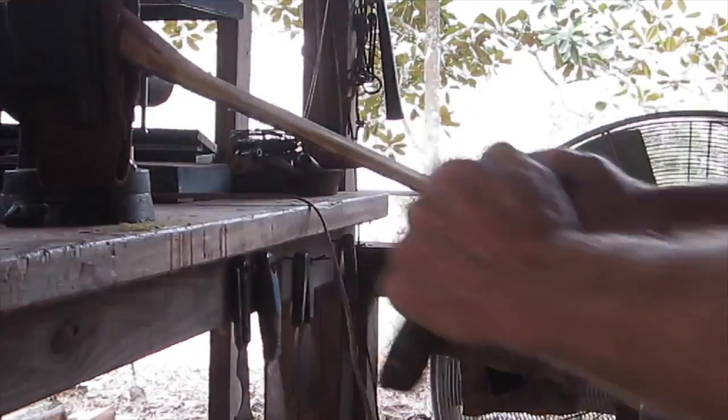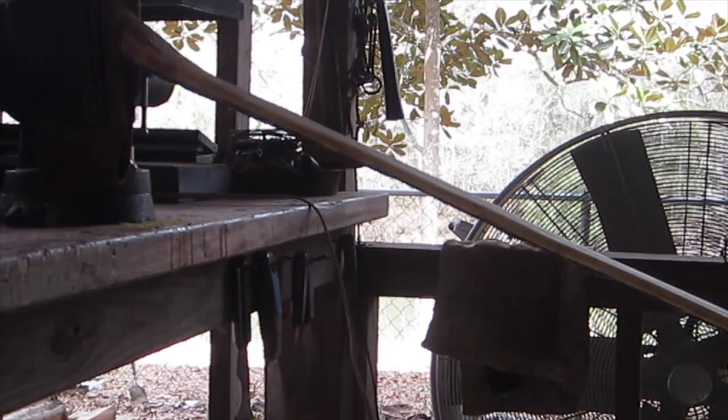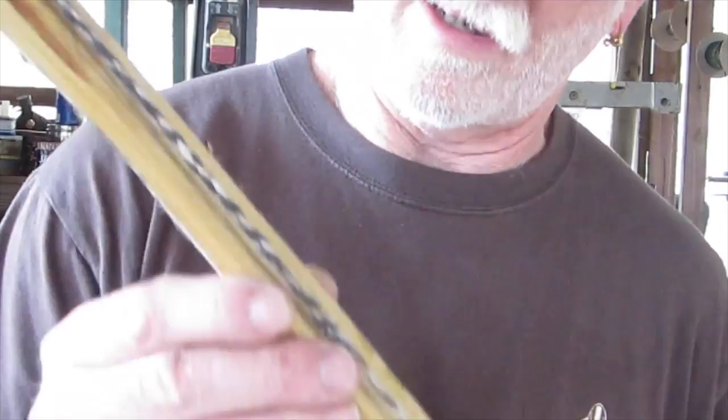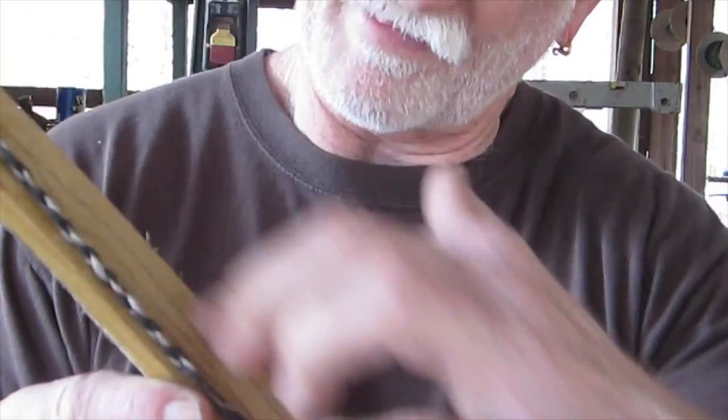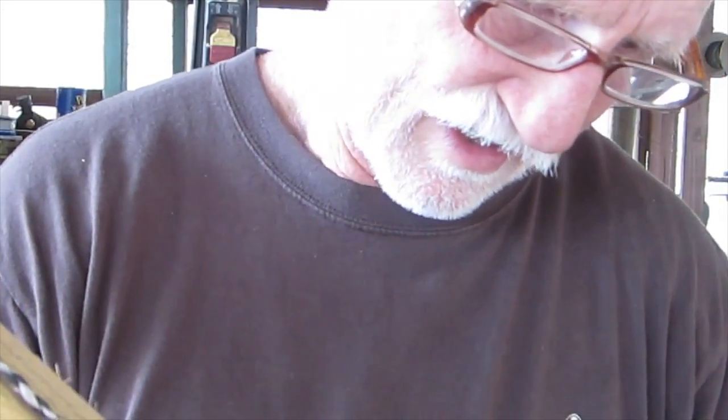I was taking wood off the entire length of the limb instead of this limb. Now on the other hand, this limb only needs to be pulled down from here up. This part right here is what's holding up. Everything down here is starting to bend pretty nicely. Everything from here up is not wanting to bend very well.